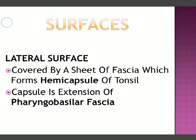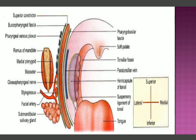The lateral surface is covered by a sheet of fascia which forms the hemicapsule of the tonsil. This fascia is a continuation of the pharyngeal basilar fascia, which covers and attaches from the pharynx to the base of the skull. It is called a hemicapsule because it only covers the lateral surface — it is not a complete capsule.